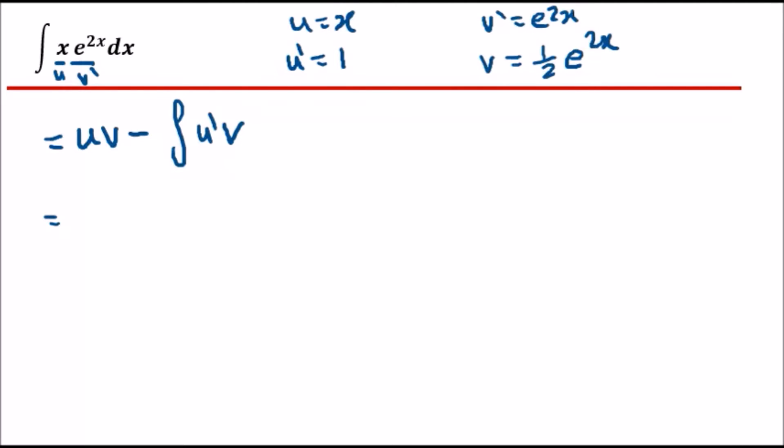u times v: so x times half e to 2x, and just say half x e to the 2x minus the integral of u prime, which is one, so that's just one times v, which is half e to 2x. So I could put half outside, so it'd be half integral e to 2x.